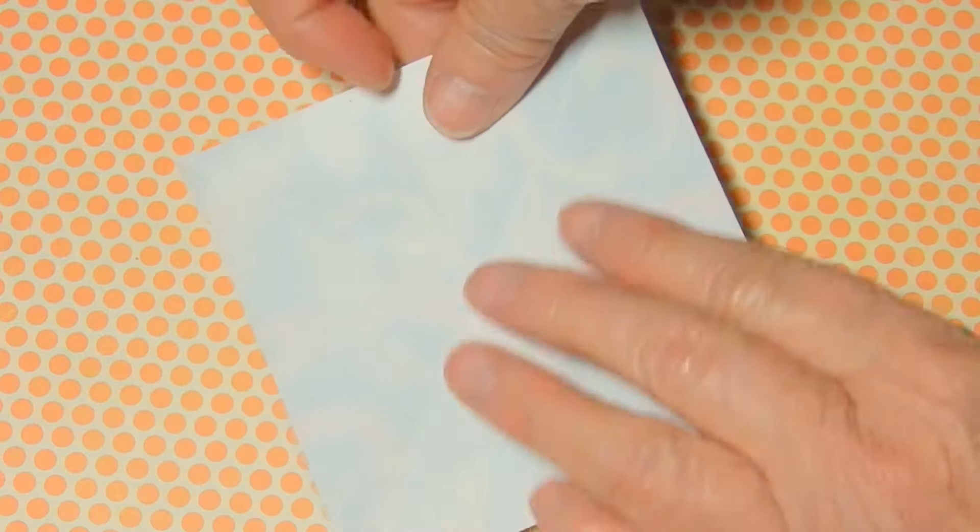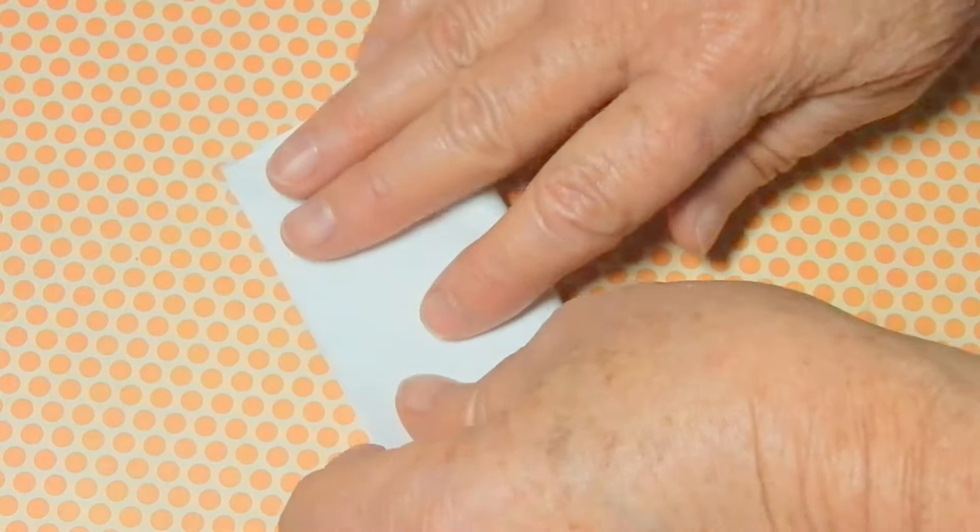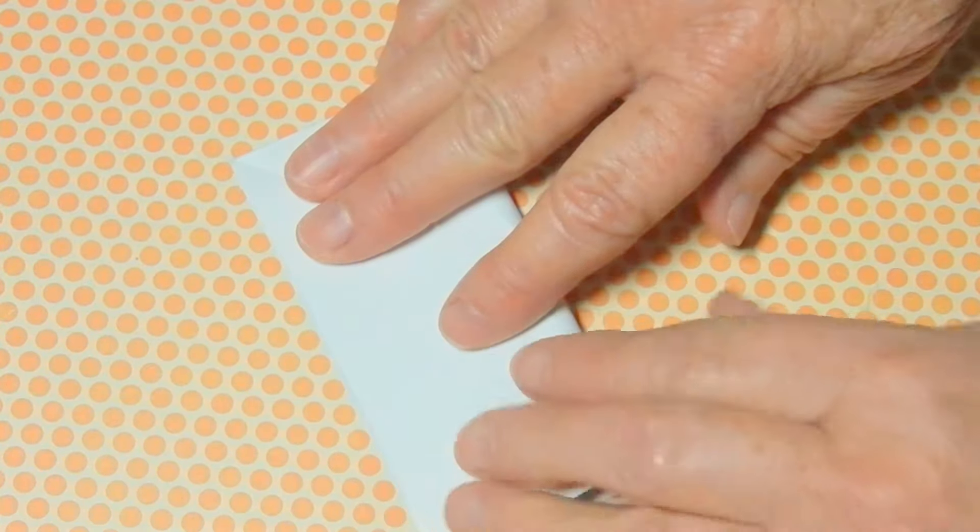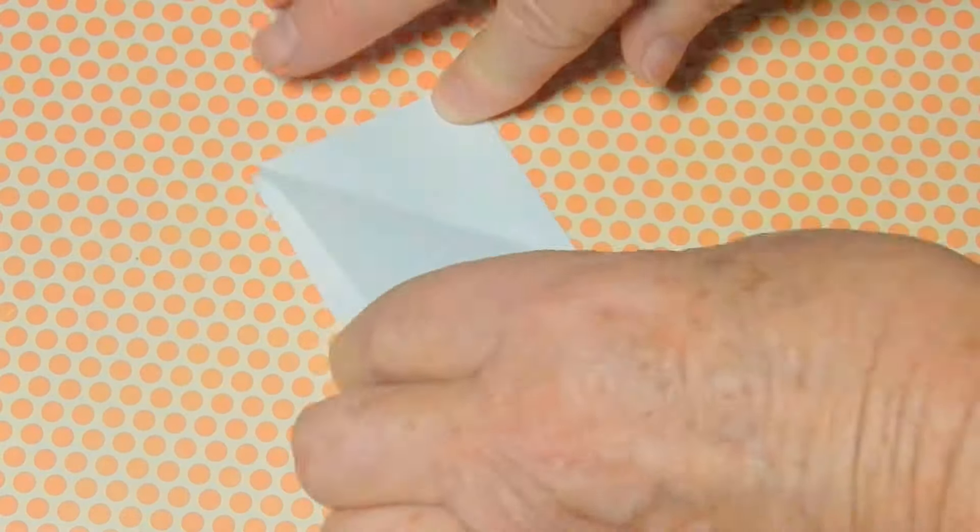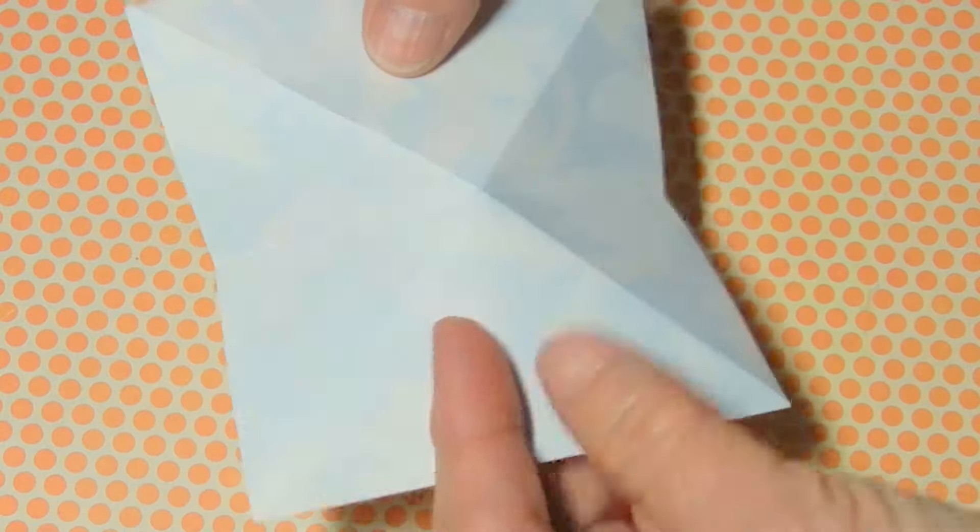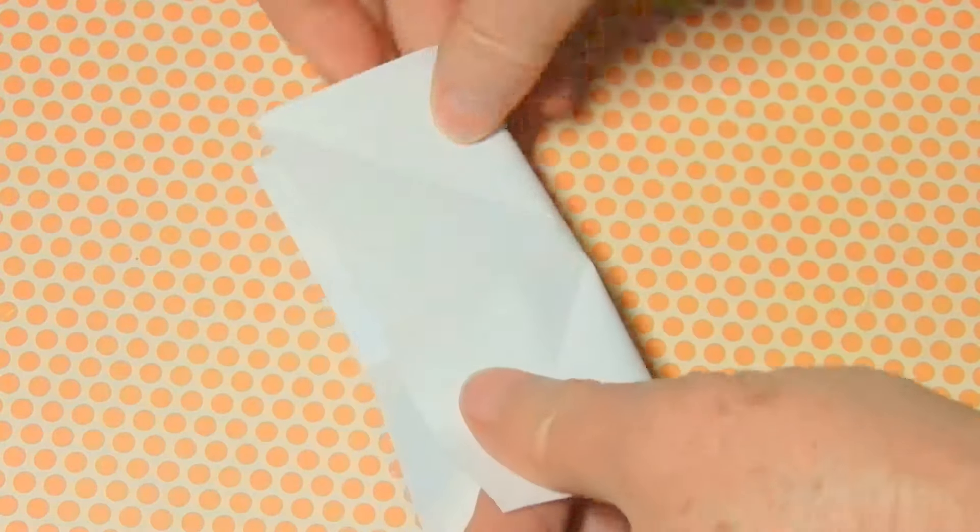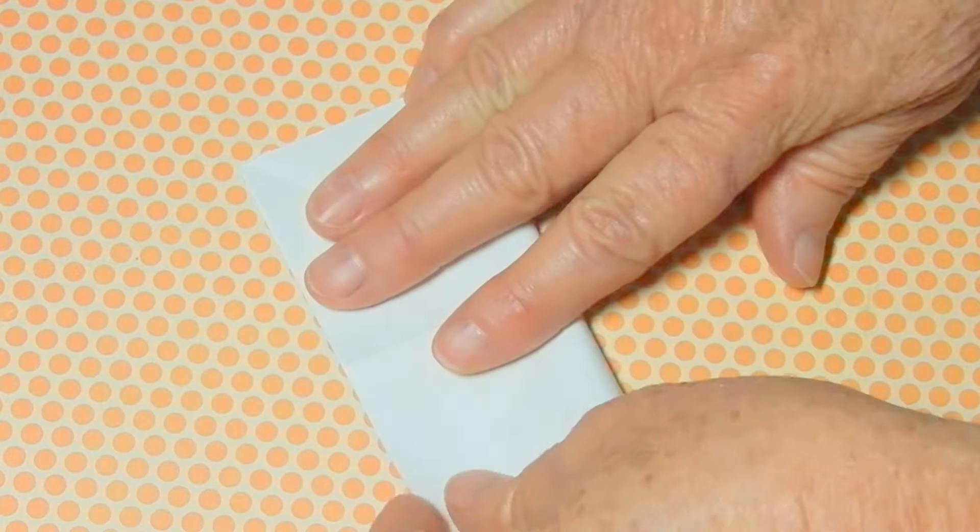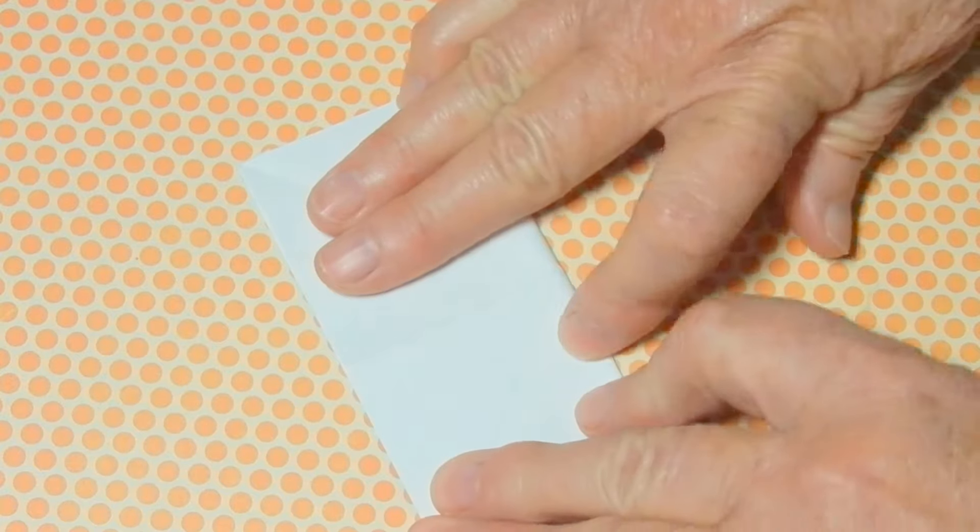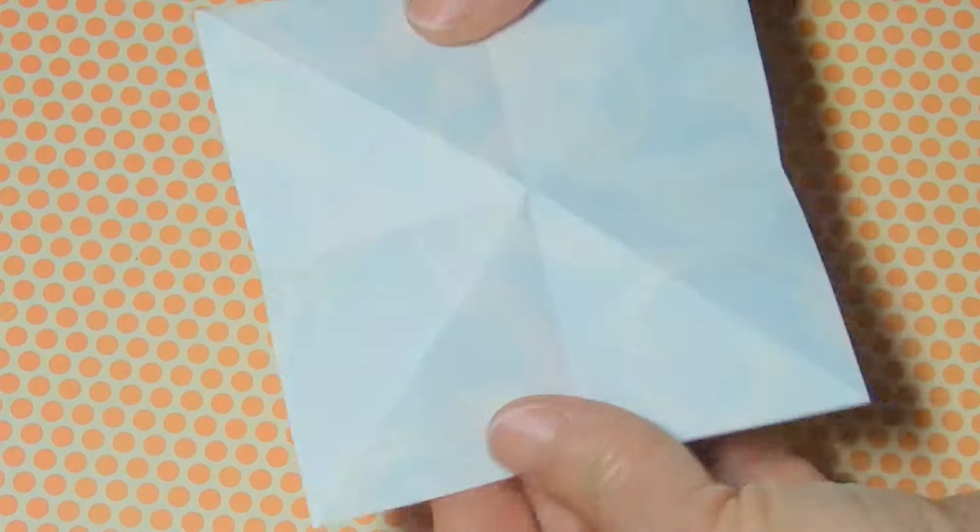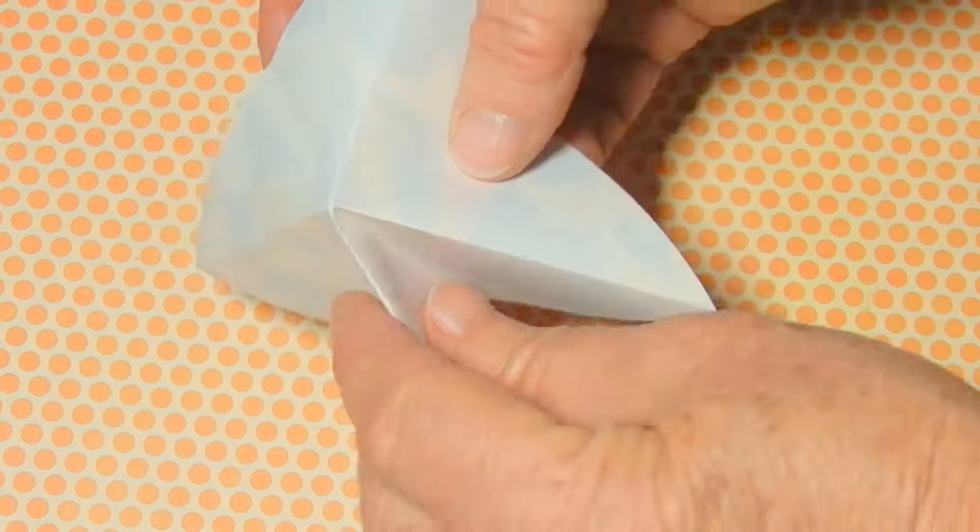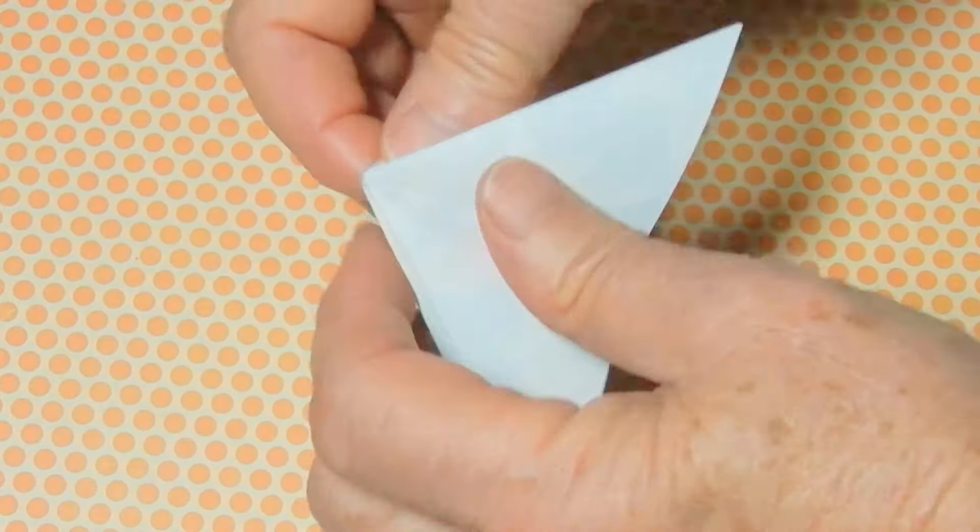Next, fold it in half horizontally once and then twice. Now we can easily collapse it into an origami water bomb.